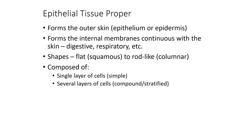Epithelial tissue comes in a lot of different types. It can be relatively flat, referred to as squamous, or relatively thick, referred to as columnar. The tissue can have either a single layer and be considered simple, or several layers and be considered compound or stratified. So depending on how flat and simple the cells are, it may be a very thin layer like inside the lungs where respiration happens, or if it's very thick and multilayered like on your skin, it can provide a barrier to the outside world.